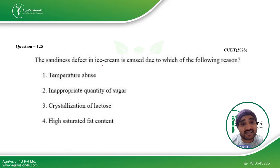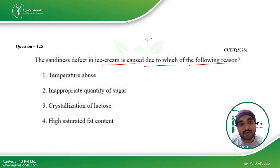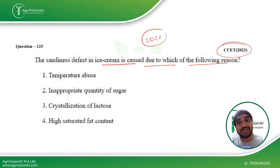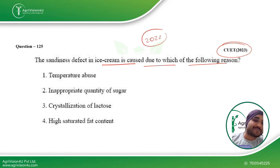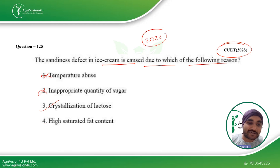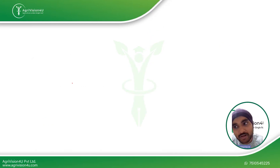Sandiness defect in ice cream is caused due to which reason? This is one of the repeated questions — it was also in the 2022 paper and came again in 2023, so expect it in the 2024 paper too. Looking at options: temperature abuse — no; inappropriate quantity of sugar — no; crystallization of lactose — yes; high saturated fat content — no. So the third option, crystallization of lactose, is the answer.